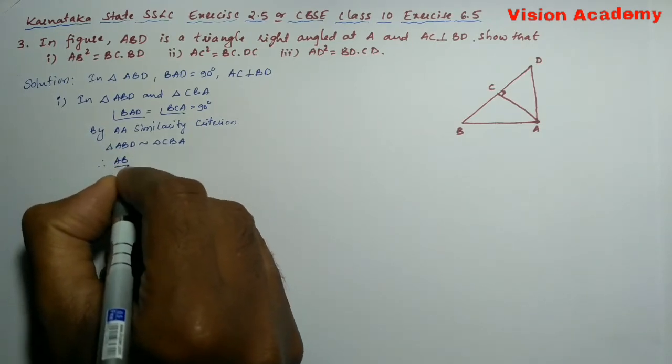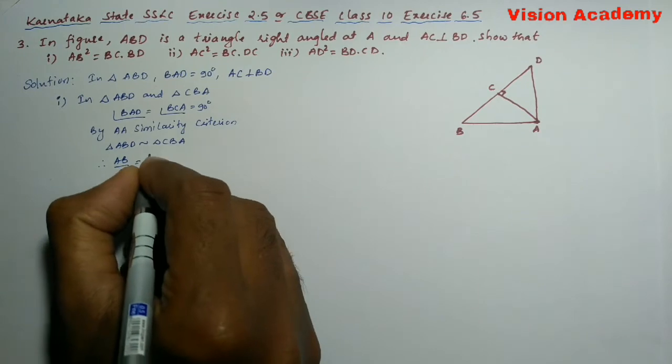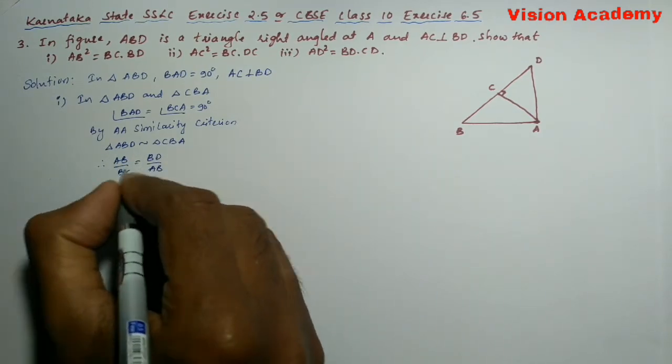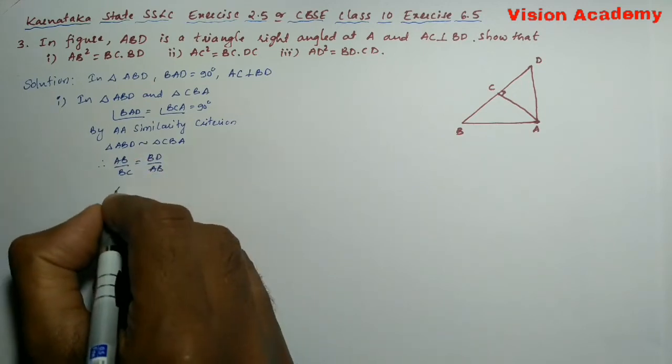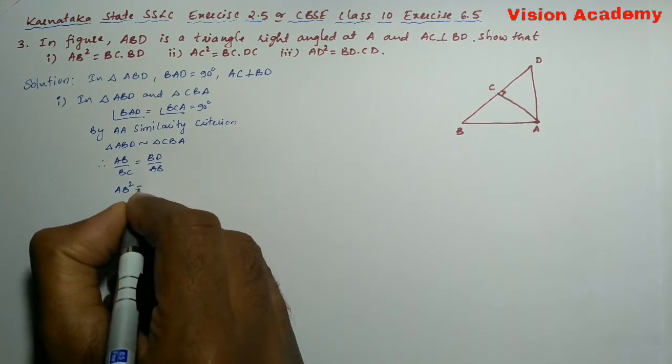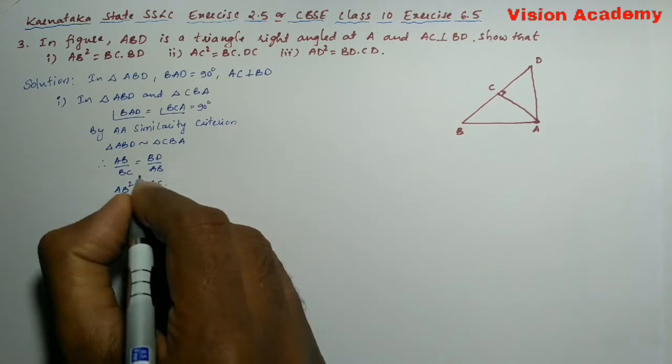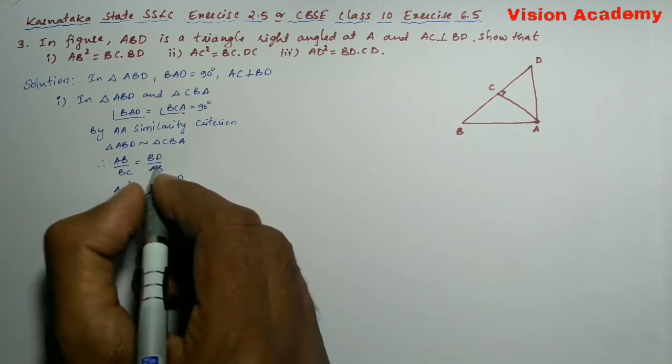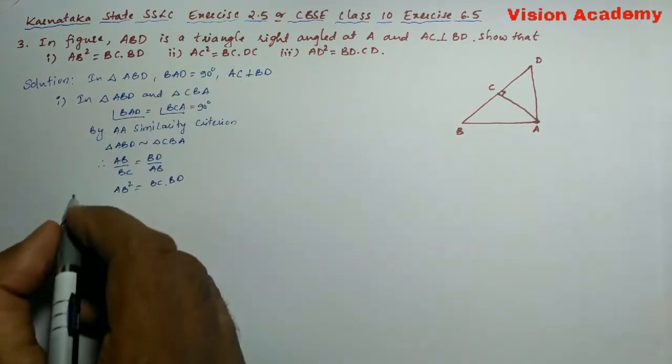we can write AB by BC is equal to BD by AB. When we cross multiply, we will get AB square is equal to BC into BD. Hence the proof. Next, we will move on to the second question.